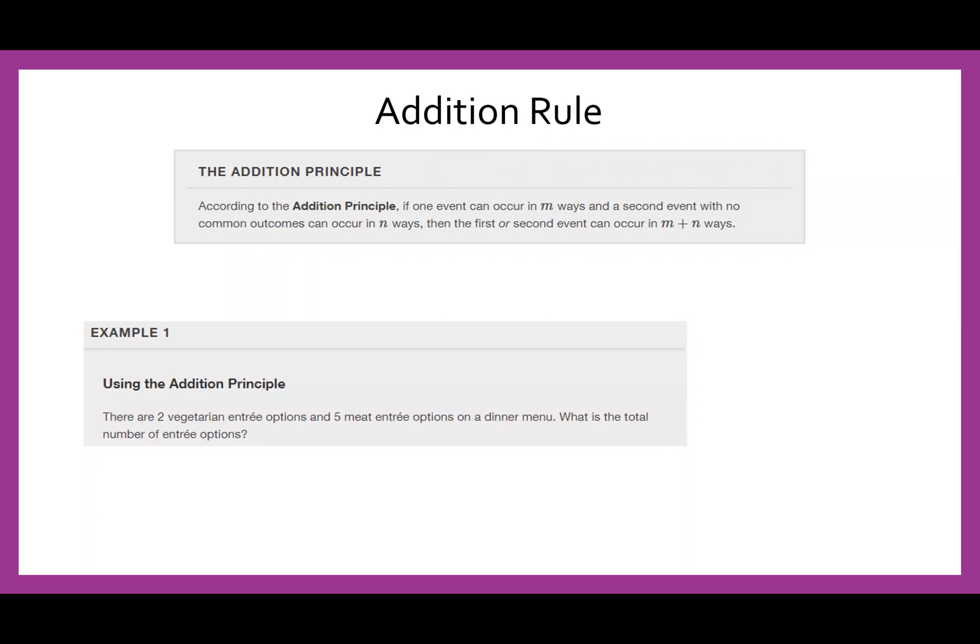So if we have two vegetarian entree options and five meat entree options, the total number of entree options is two plus five, which is seven. So you're just combining all of your options. That's the addition rule. It's pretty straightforward.